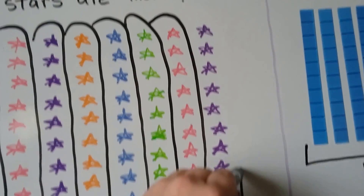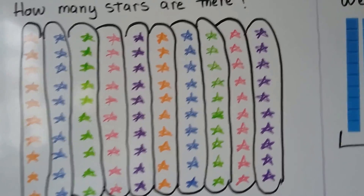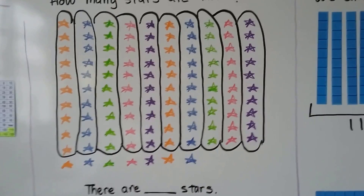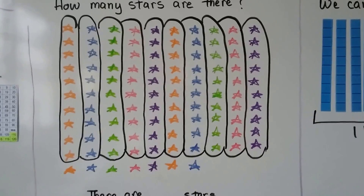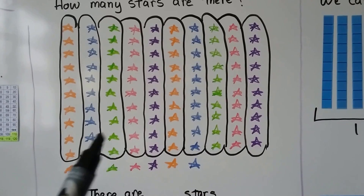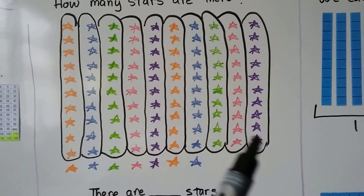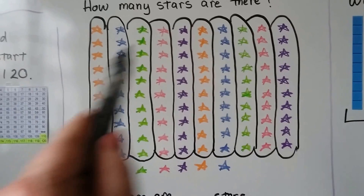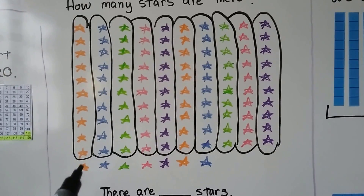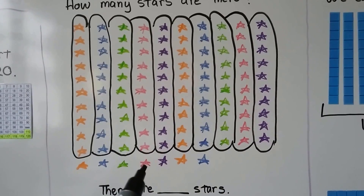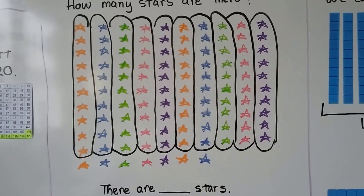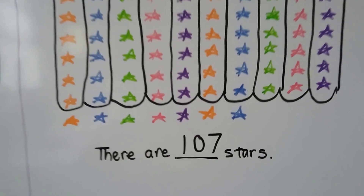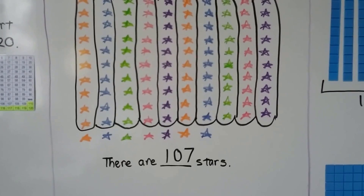So we're going to finish circling all of these tens. We made groups of tens, and we have some left over — 1, 2, 3, 4, 5, 6, 7 left over. That's not enough to make another group of 10. So how many groups of 10 do we have? 1, 2, 3, 4, 5, 6, 7, 8, 9, 10. We have 10 tens. Remember, 10 tens is equal to 100. So all of these in the groups are 100. Then we have 101, 102, 103, 104, 105, 106, 107. There are 107 stars. There's 10 tens and 7 left over — 107.